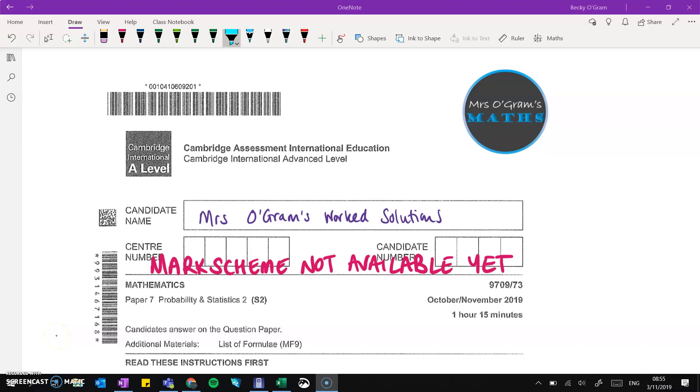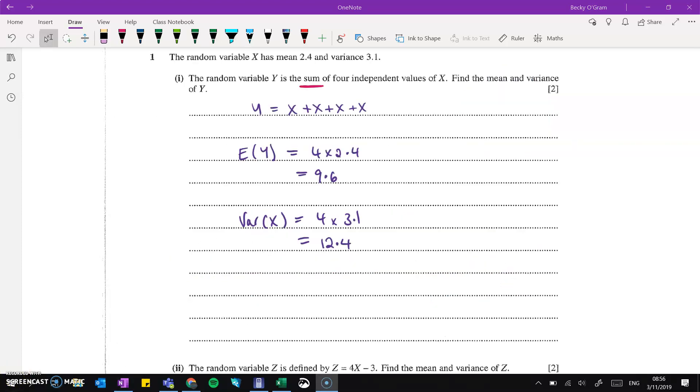Welcome back to Mr. O'Graham's Maths channel. We are going through the work solutions for the S2 paper from the October-November 2019 session, paper 73. As usual, when I'm putting these out quickly after the paper was sat, the mark scheme is not available yet. So if you find mistakes in the video, go with any corrections so that people coming across this video later will know.